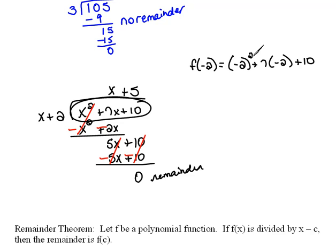Negative 2 squared would be 4. And this would be minus 14 plus 10. So we would have negative 10 plus 10 is 0. Isn't that interesting?